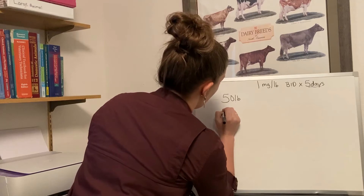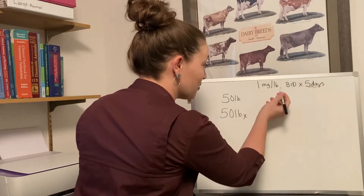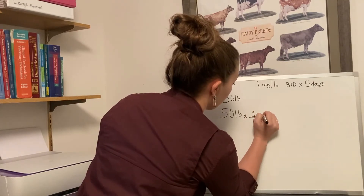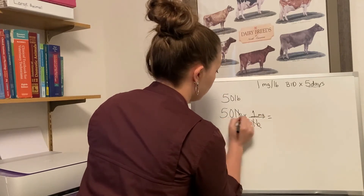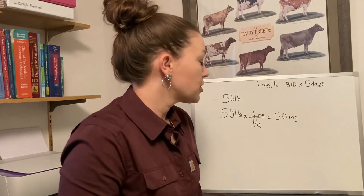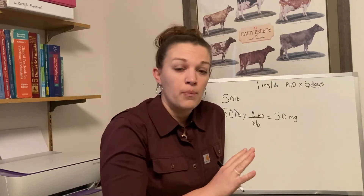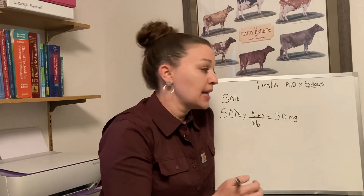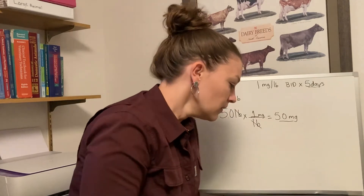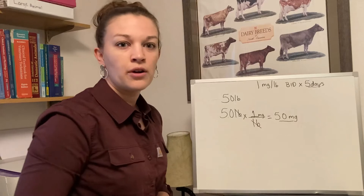Let's get started by setting up our calculation using dimensional analysis. So our 50-pound patient — this one's super easy since our dosage is in mg per pound. We'll just put our pounds with our one milligram and cross out our pounds. 50 times 1 is 50 milligrams. When we're talking about strength for tablets and capsules with multiple options like carprofen, it's easiest to stop your dimensional analysis at the milligrams — find the dose your patient needs and go from there. We figured out our patient needs 50 milligrams, so let's go to our pharmacy.